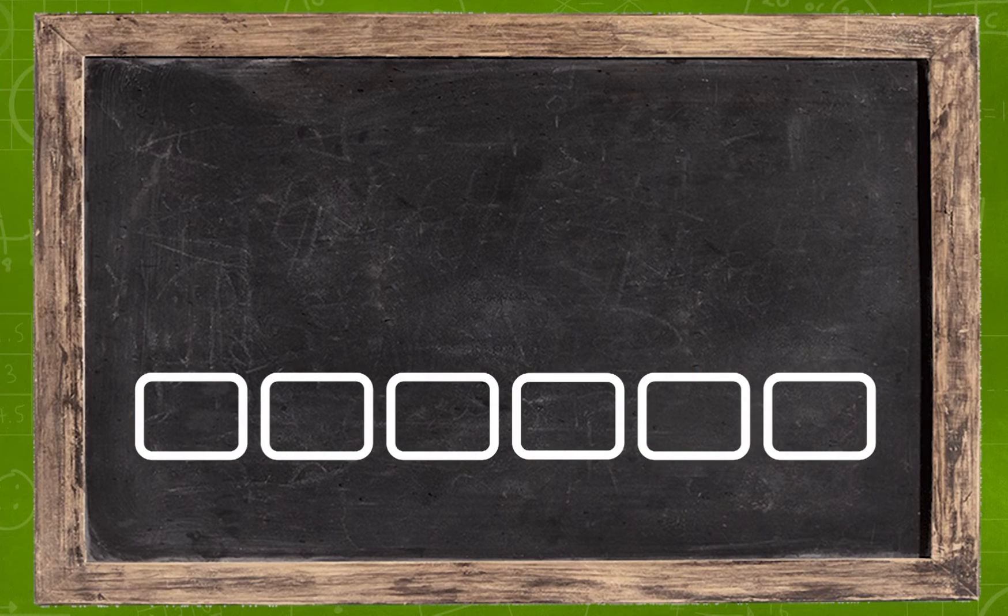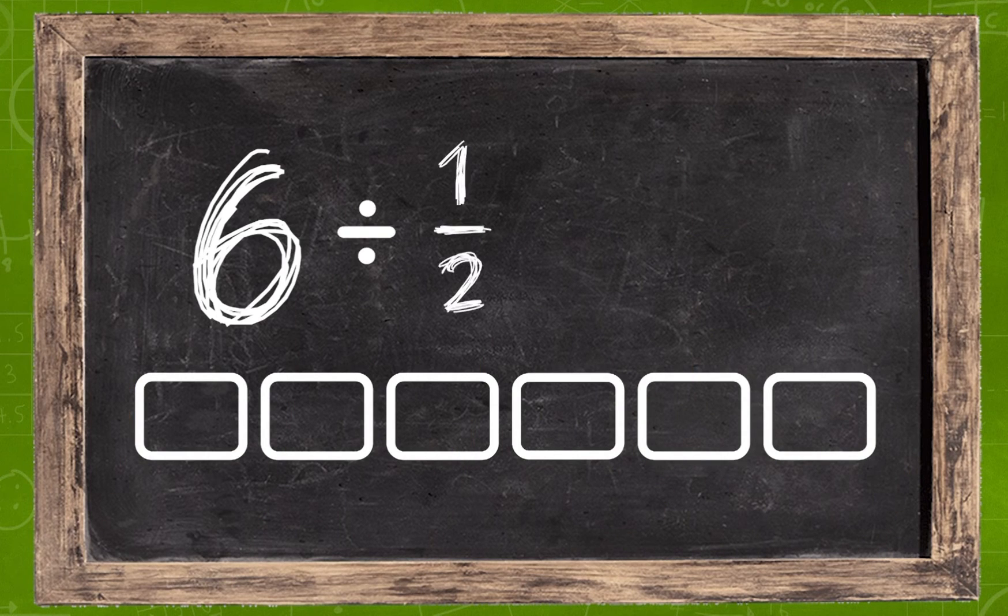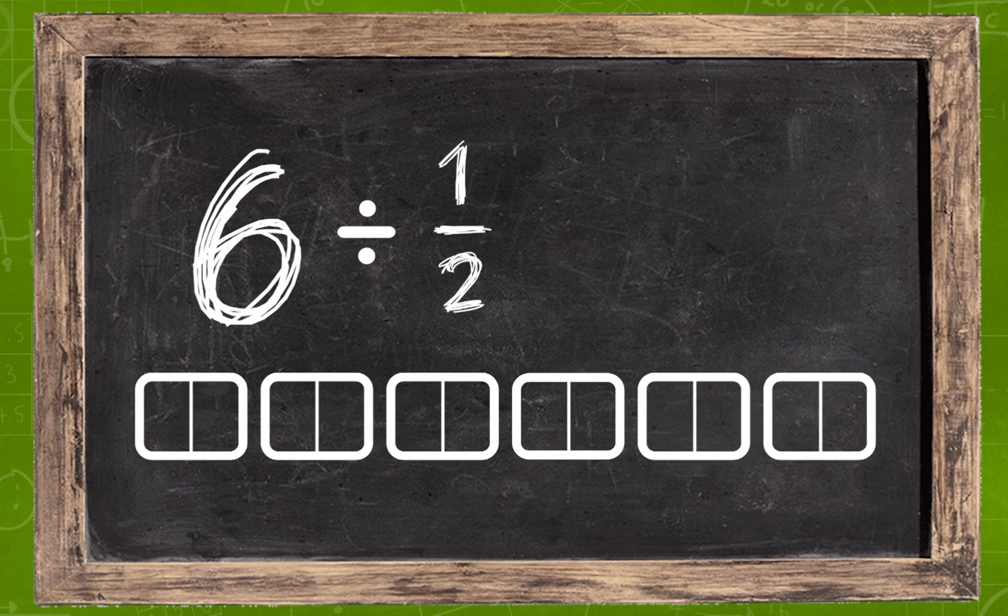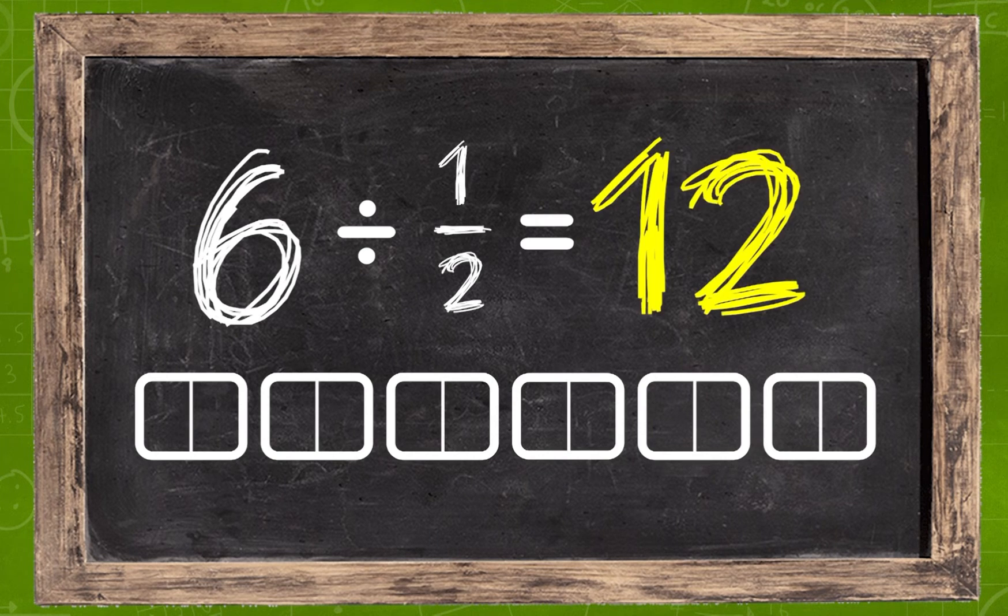Now if I say, show me how you would divide 6 by 1 half, you would need to divide each piece in the chocolate bar into 2 half-sized pieces. So you would get 12 pieces of chocolate.